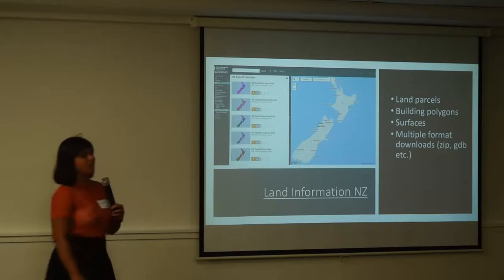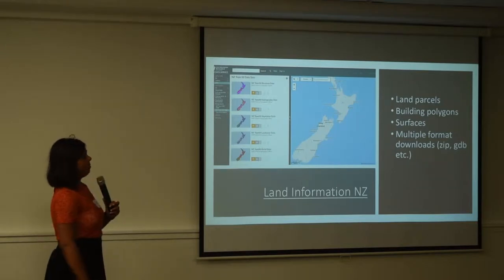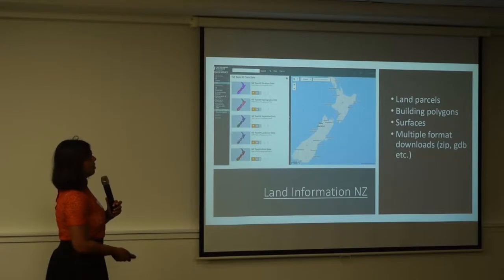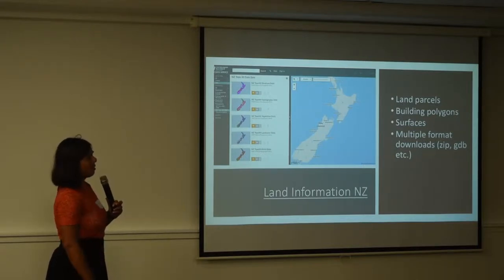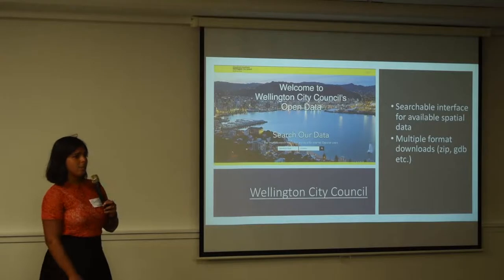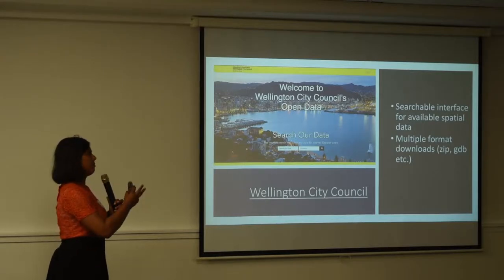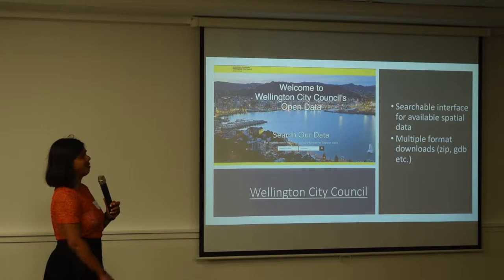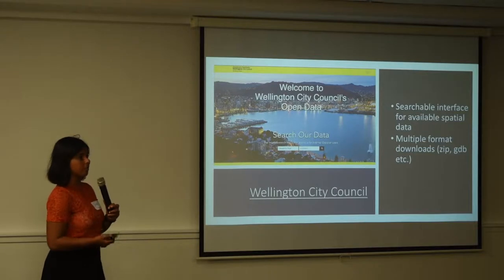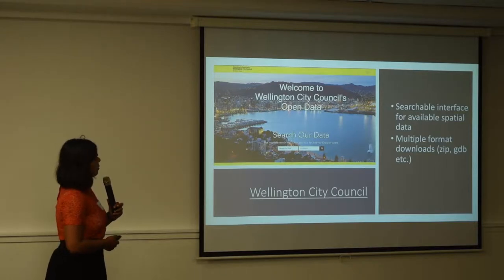In terms of data, what do we have? We've actually got loads. There's LINZ — I'm pretty sure most people are aware of Land Information New Zealand. They've got loads of surface data that you can get, just from the Stats New Zealand website. Some of them are quite big files, but you can download them in any format. You've also got the wonderful Wellington City Council open data interface, which you can search for things like council playgrounds, schools, and so on, with multiple format downloads depending on what software you're using for analysis.